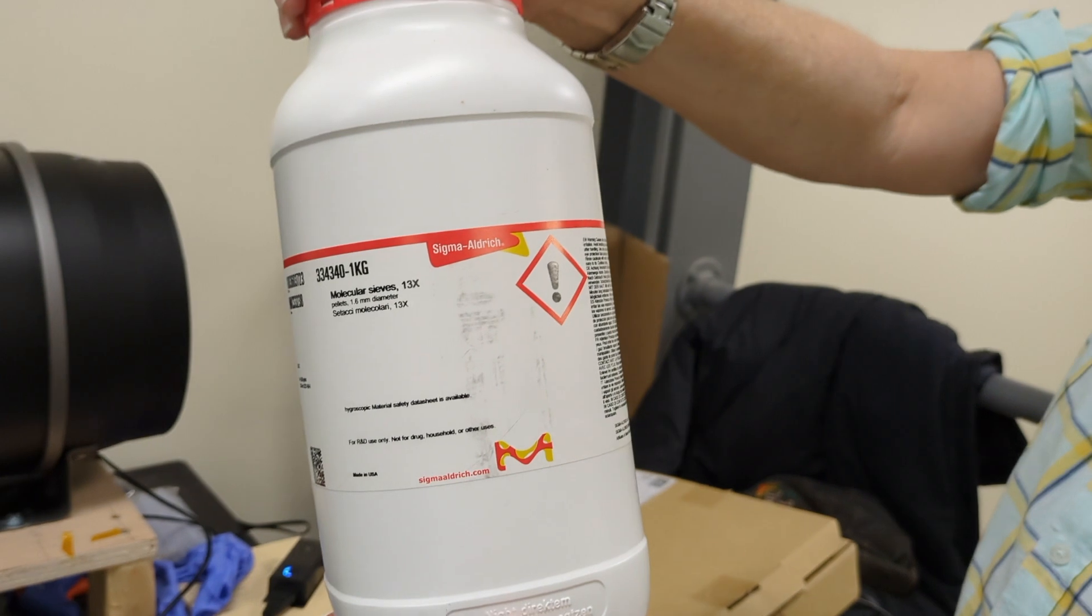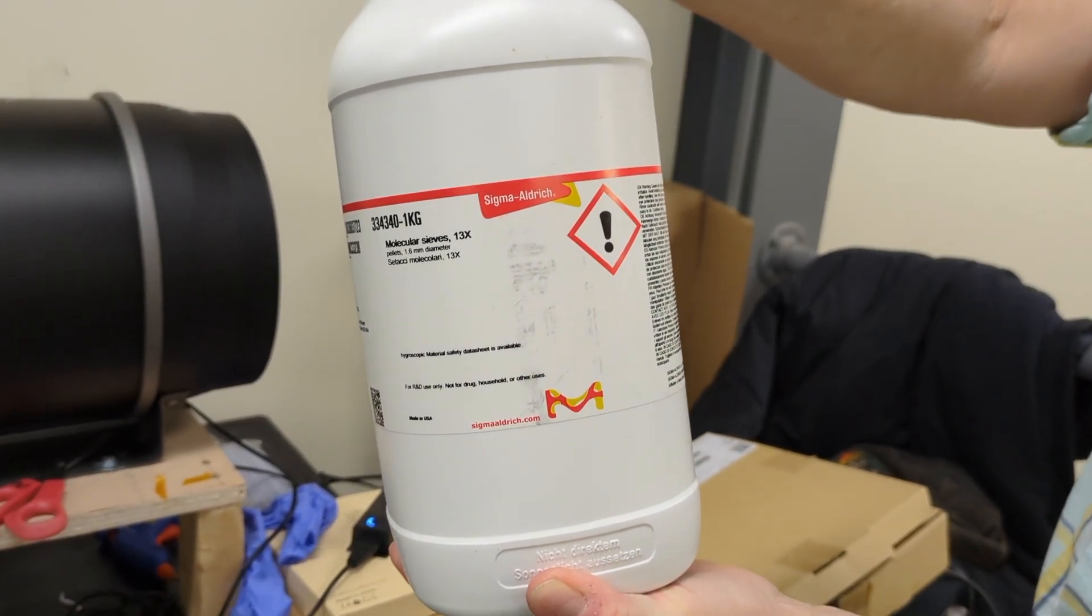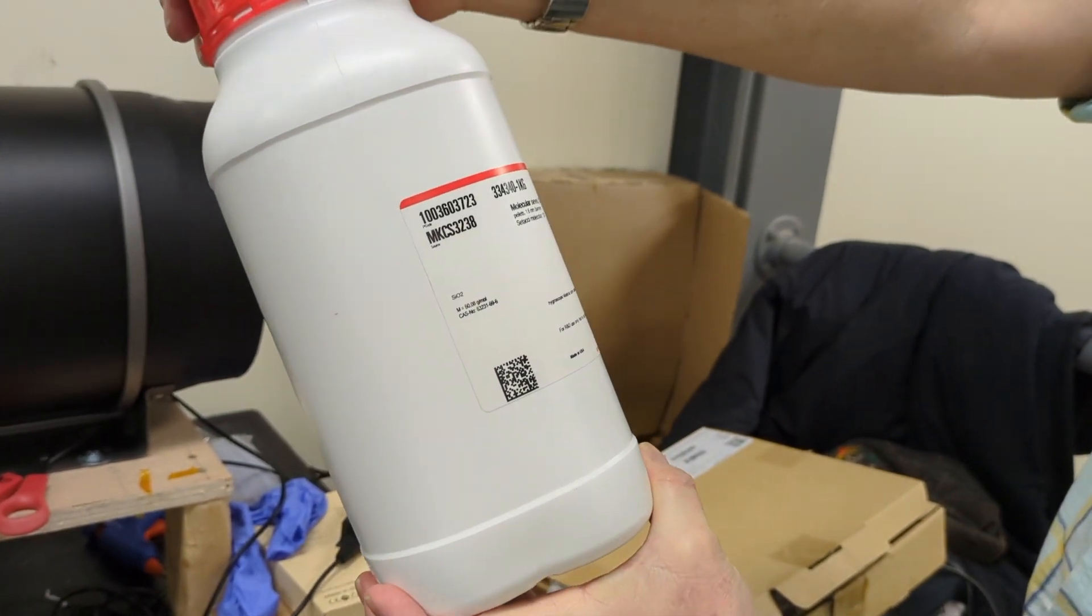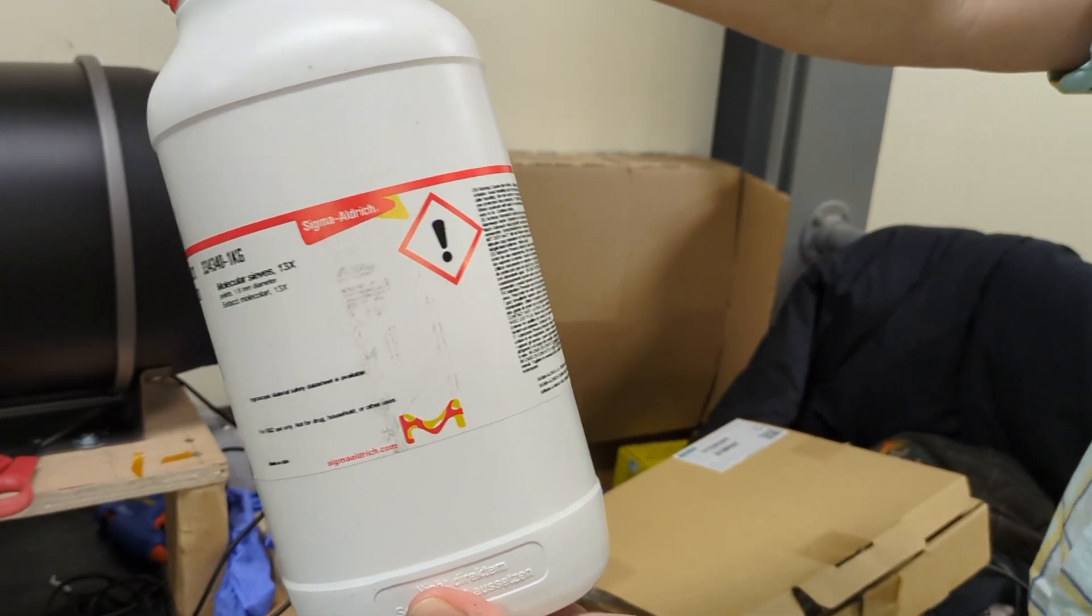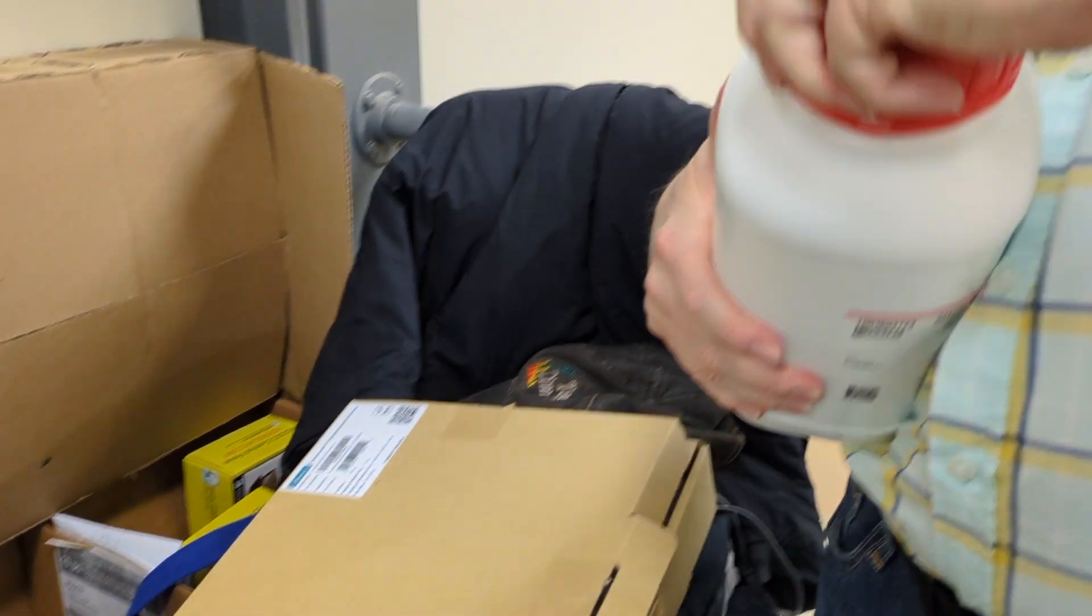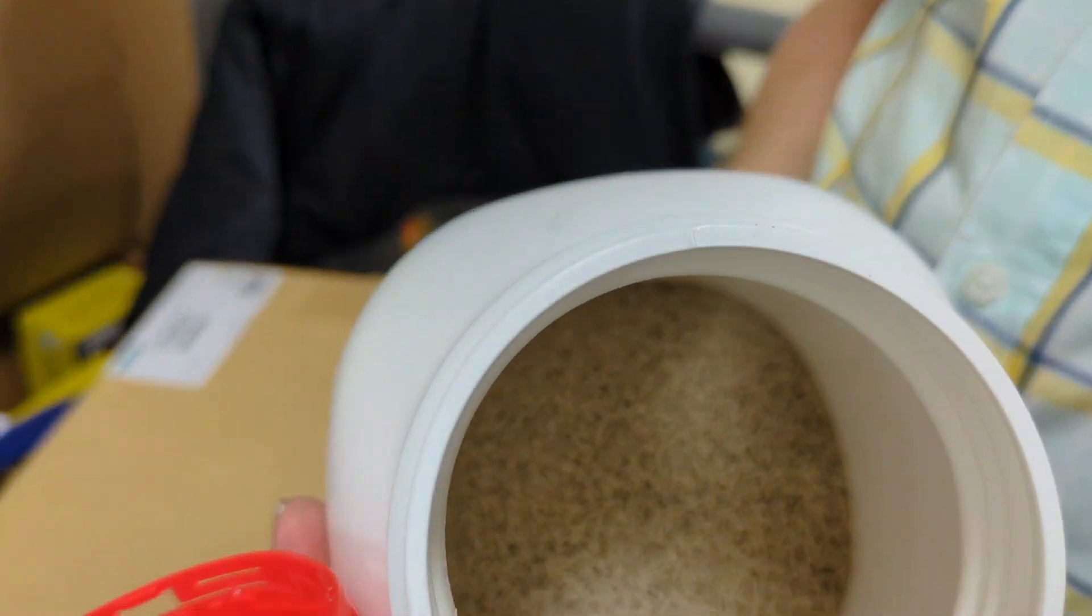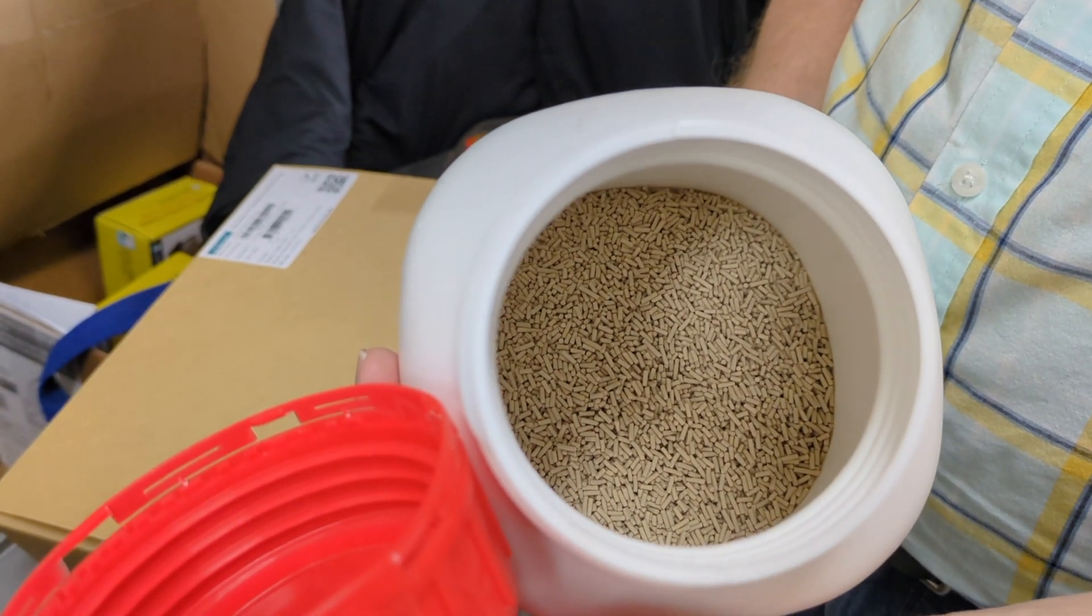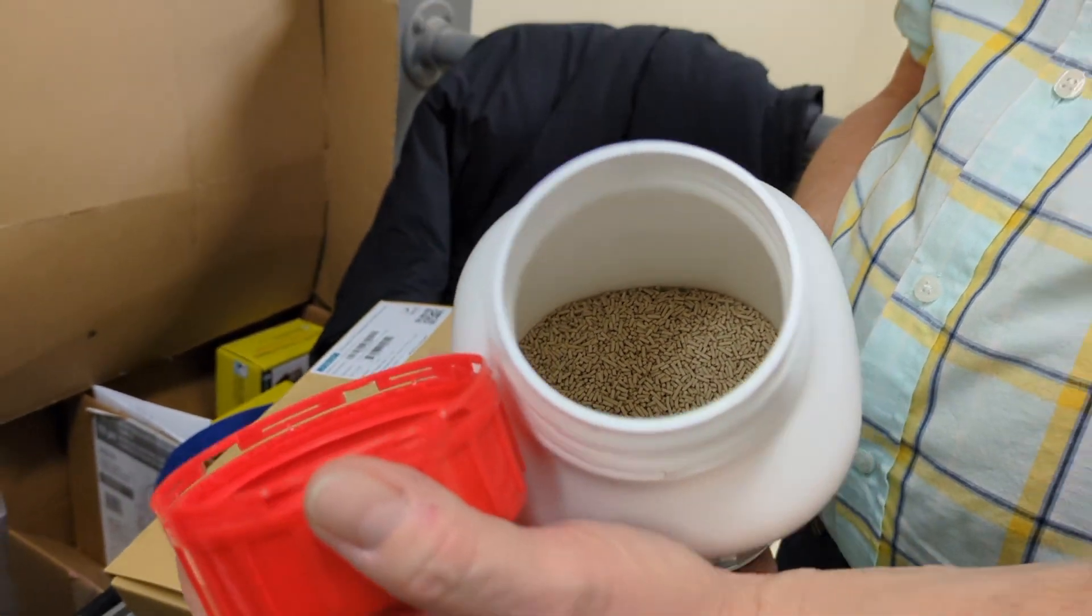It's called a molecular sieve. The technical term is 13x zeolite. And we don't have much actual technical information about it other than that. Can we open it up and see what's in the bottle? See what it looks like? It actually looks kind of like either brown rice or rabbit pellets. Ha! It does. Cool.